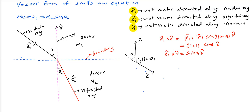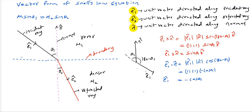Next we'll take the dot product. K̂ is the unit vector directed normal to the plane of the diagram, because Ê₁ cross n̂ is directed perpendicular to the plane containing n̂ and Ê₁. The dot product: Ê₁ · n̂ = |Ê₁| |n̂| cos(180 − θ₁) = 1 × 1 × (−cos θ₁) = −cos θ₁. This is the relation between Ê₁ and n̂.